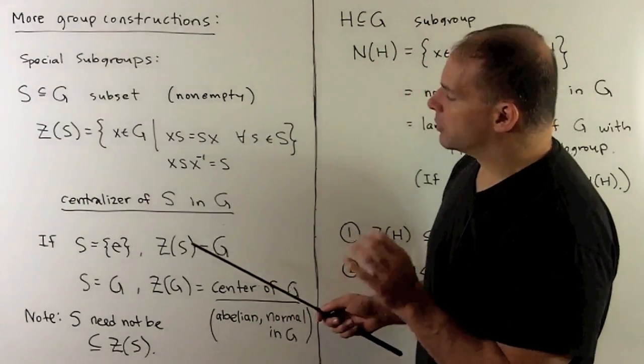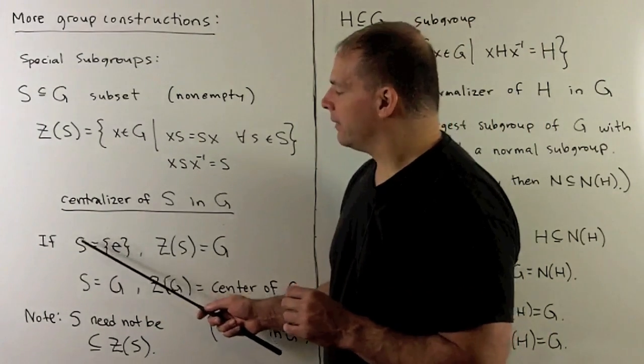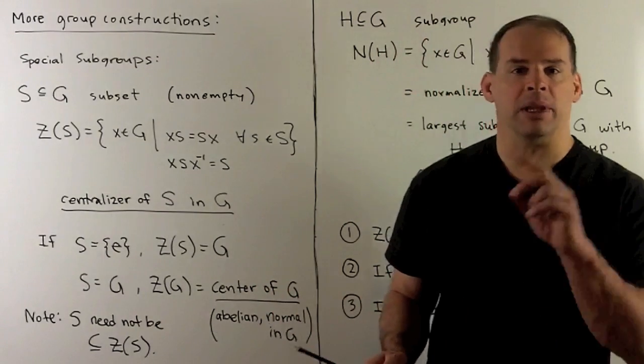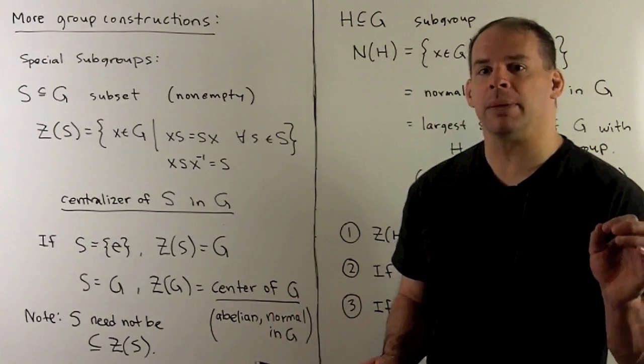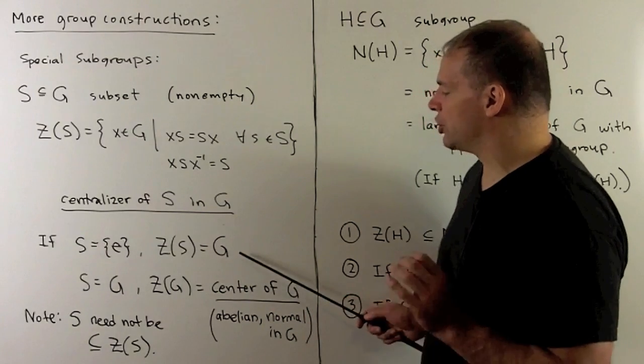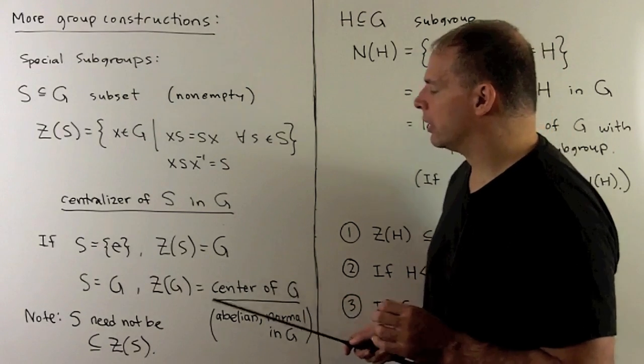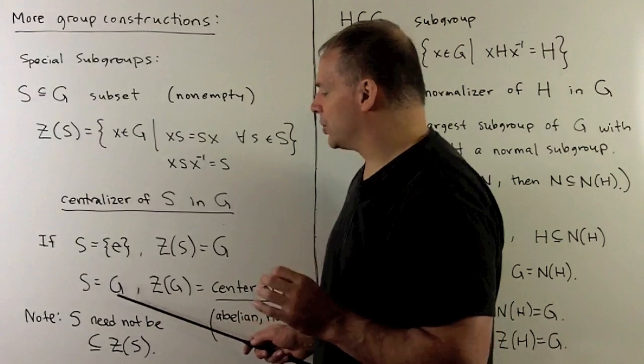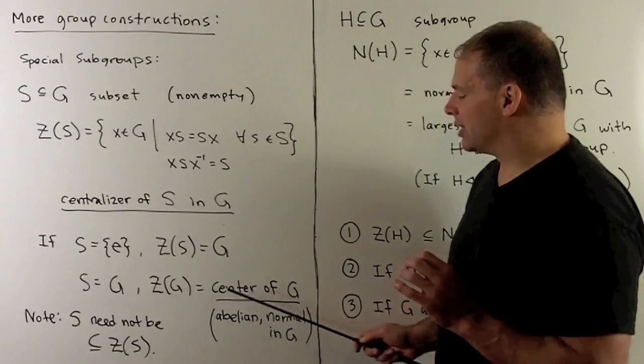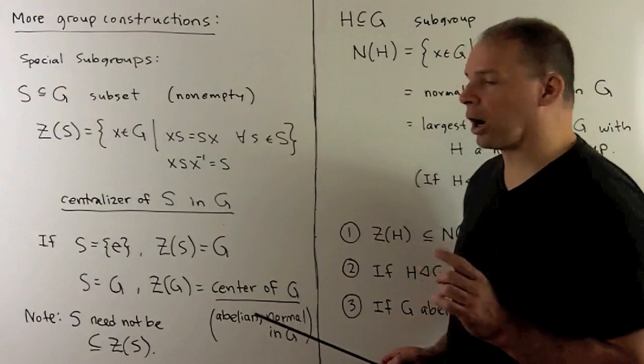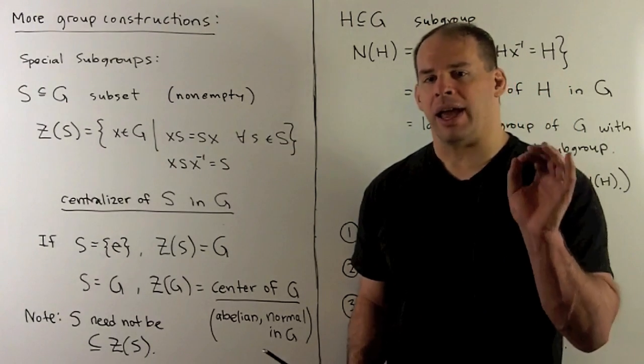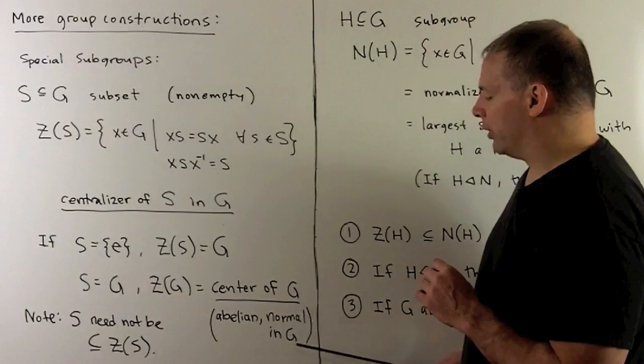Now, special cases: if S equals the identity element, every element in the group commutes with the identity element, so the centralizer of S in G equals G itself. If S equals our group, then the special case is just the center of G, which we've seen before. The center of G will be abelian and normal in the group.